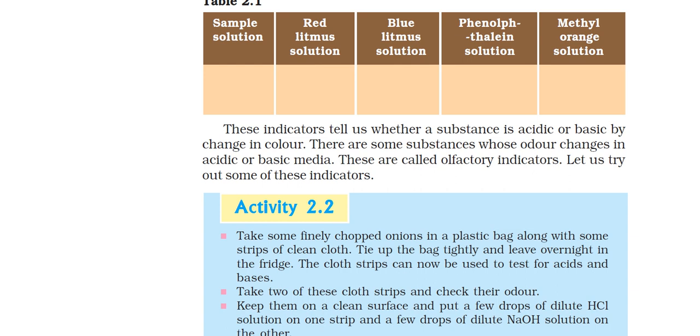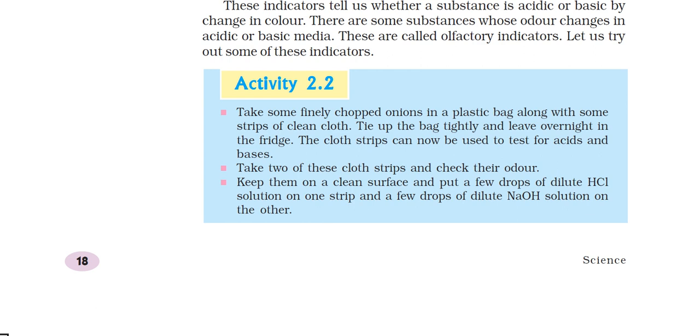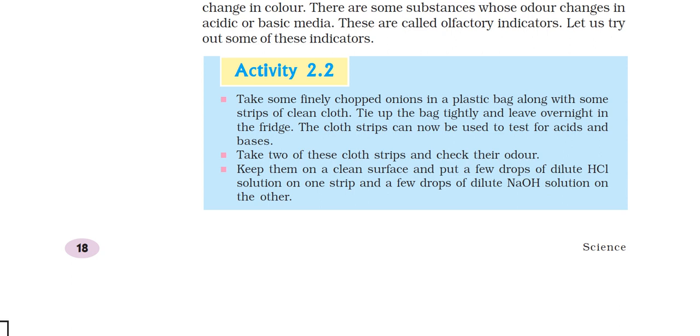Now we will try some other activities about these indicators. First, you have to chop onions in a plastic bag. Put some strips of clean cloth, tie up the bag tightly, and put it in the fridge. Then you have to use the cloth strip for testing because we will test acids and bases. Remove two of the cloth strips and check the odor.